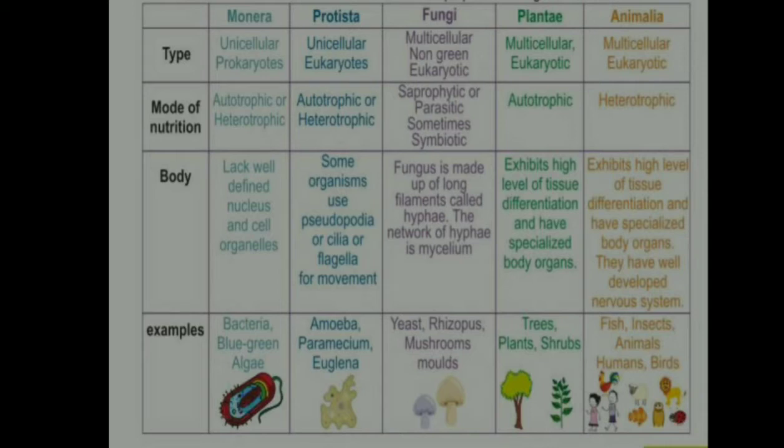Next, Plantae are multicellular eukaryotes. Mode of nutrition is autotrophic. They exhibit a higher level of tissue differentiation and have specialized body organs. Examples include trees and plants.